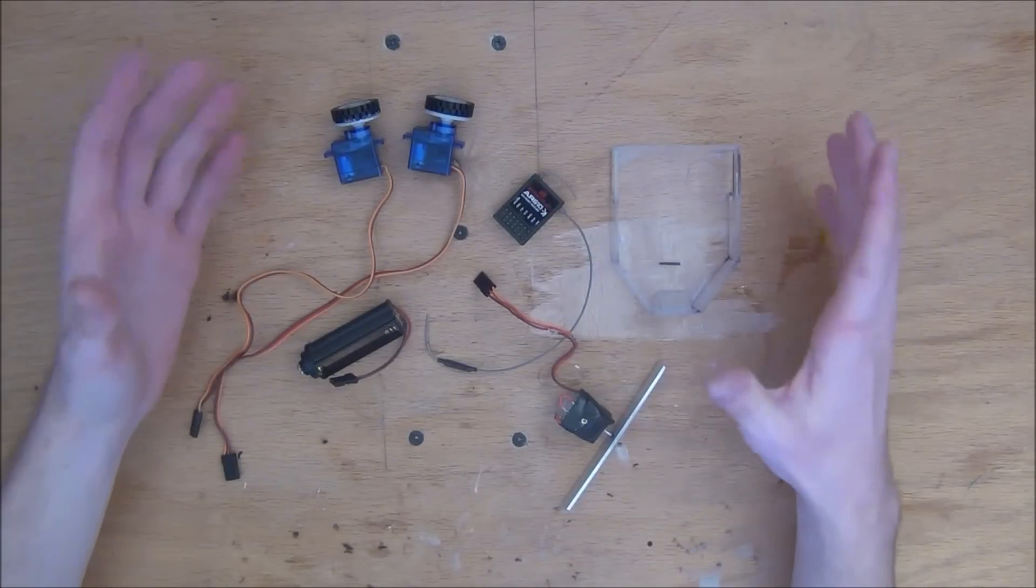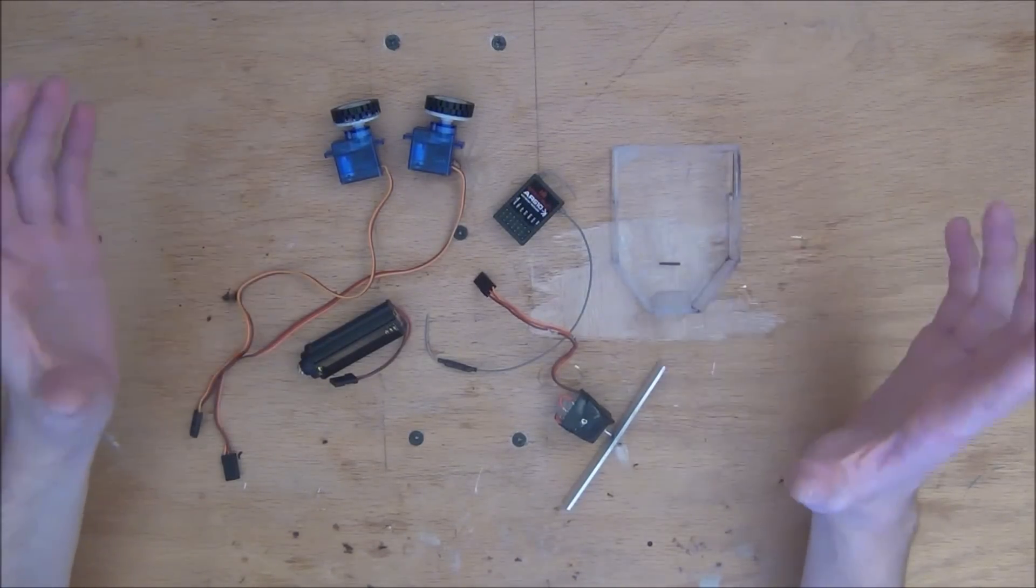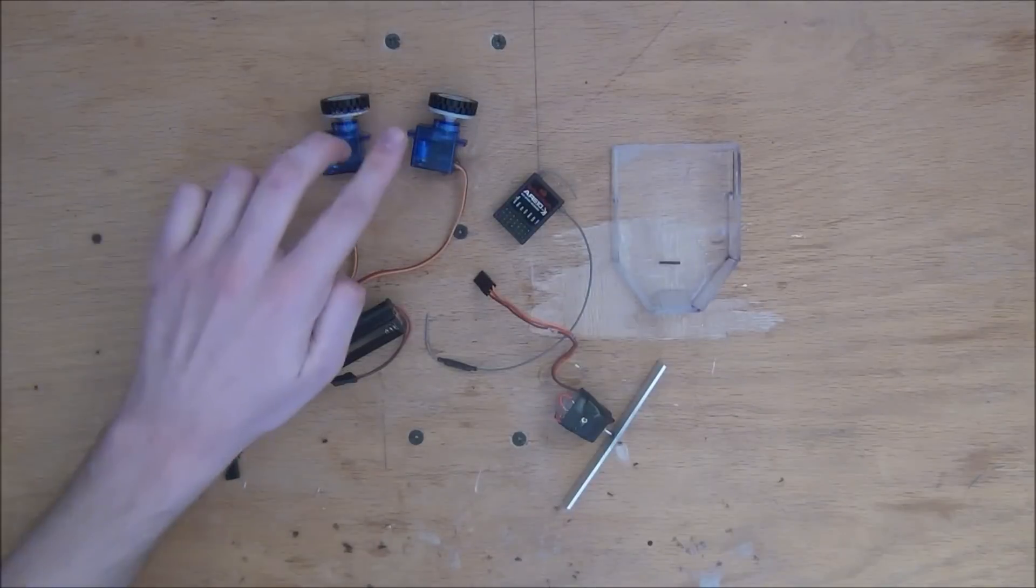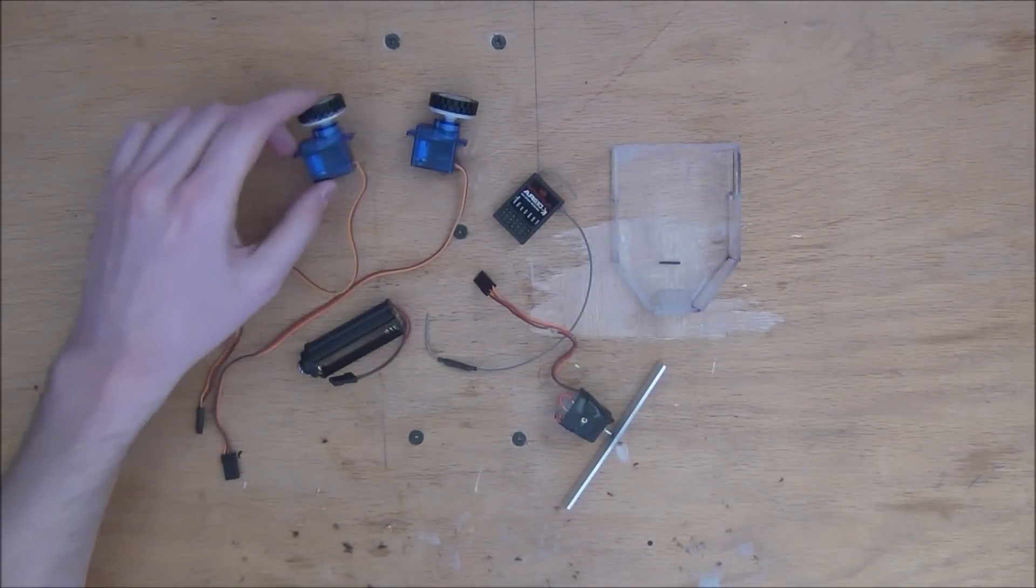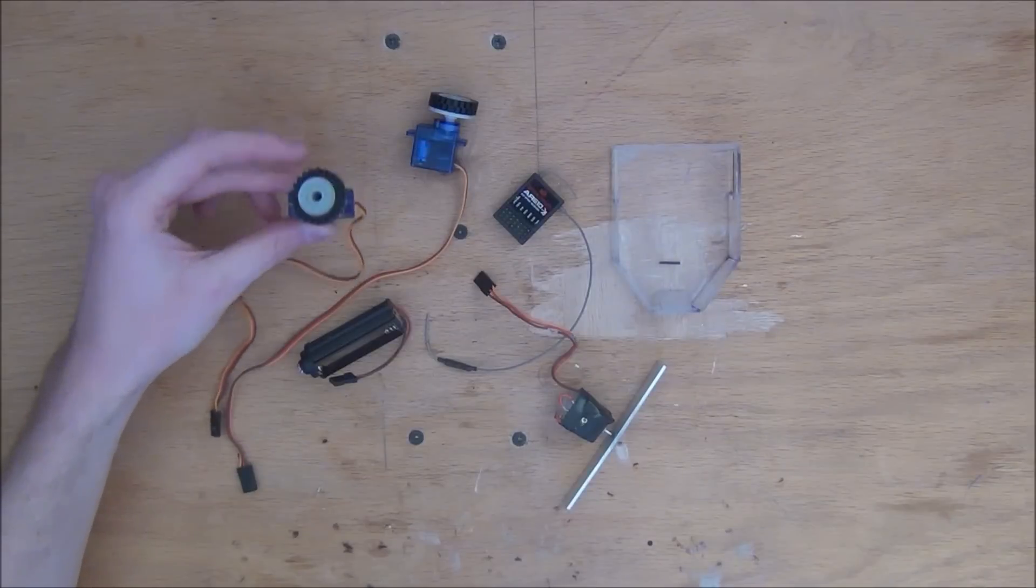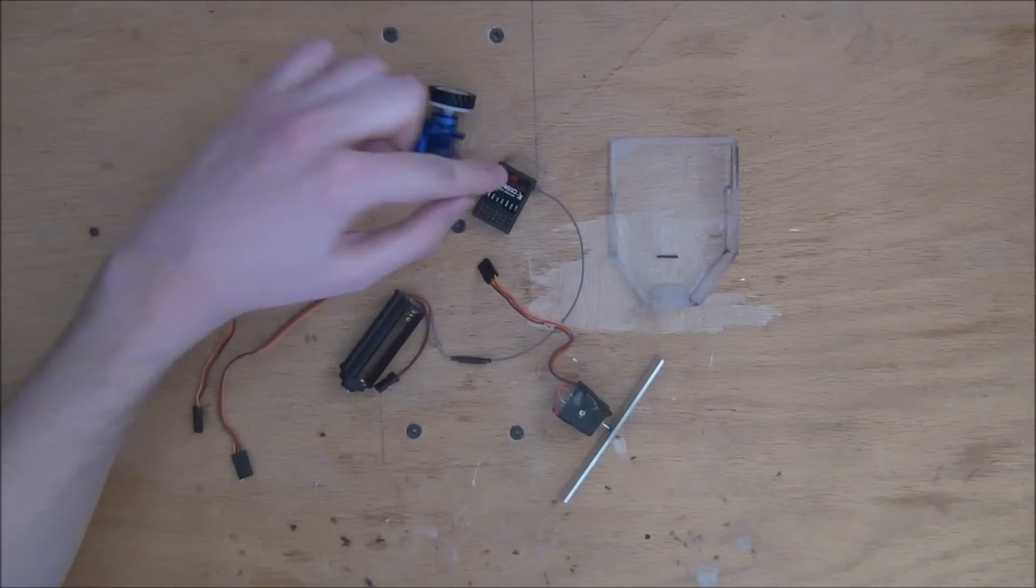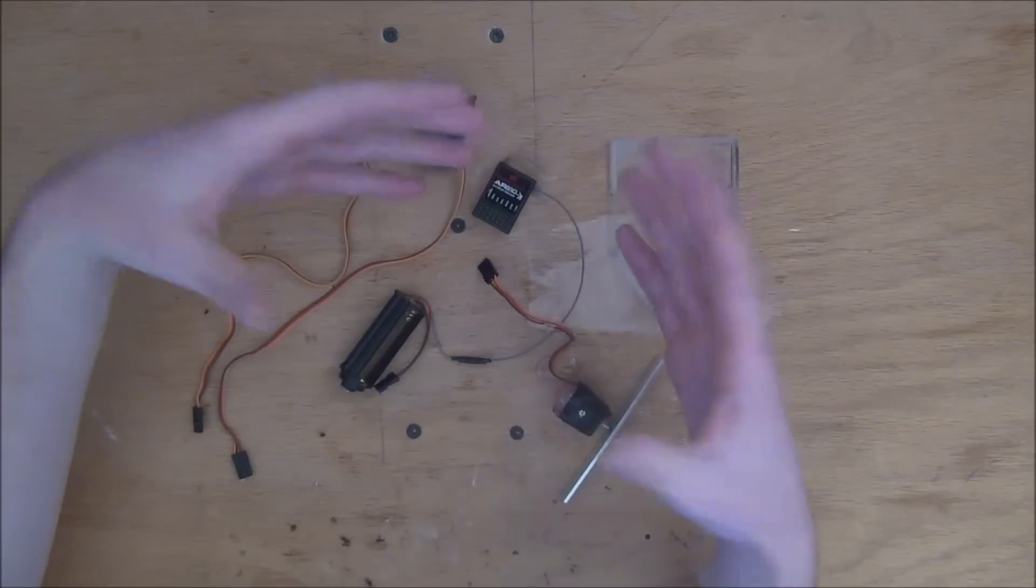So here are all the parts to the BattleBot, and you'll probably recognize a lot of these parts from the original BattleBot series. Here are the drive motors. These are actually two continuous rotation servos that I mounted wheels onto, actually Lego wheels. We then have our receiver, which is just a Spectrum receiver that everything plugs into.